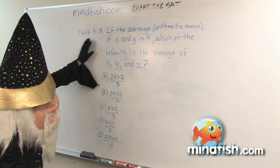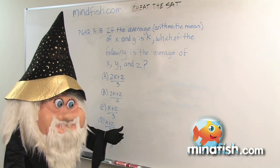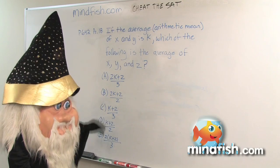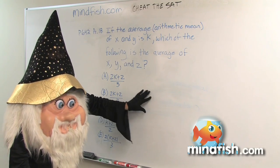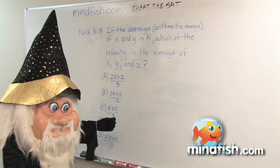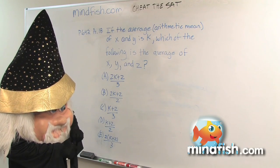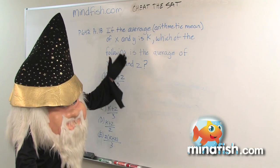So, this is question 18 on page 642. It's one of the last questions in the math section, so we expect it to be a hard question and sure enough it is. So I'm going to show you a method that we use, a magic math method, to do this question without having to do the math. And this method is called making up numbers. So what we're going to do is we're going to basically make this a concrete problem rather than an algebra problem.